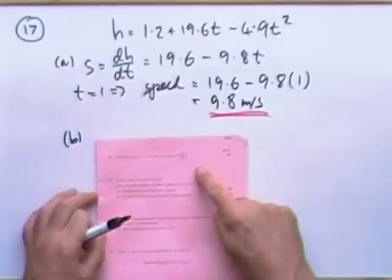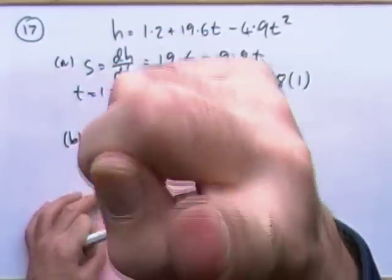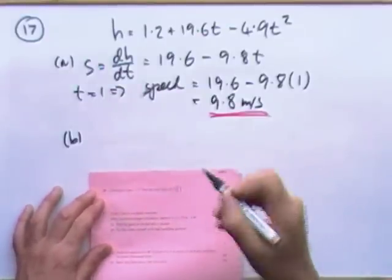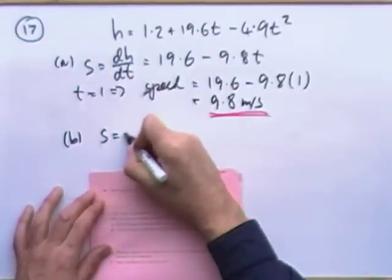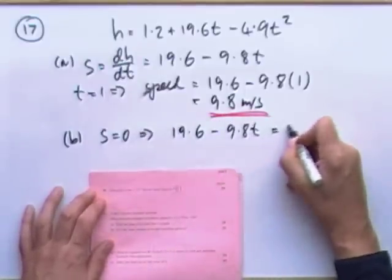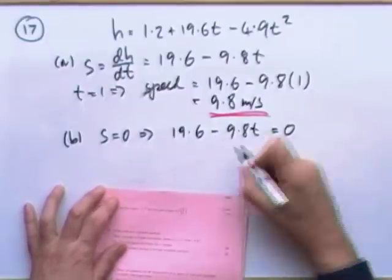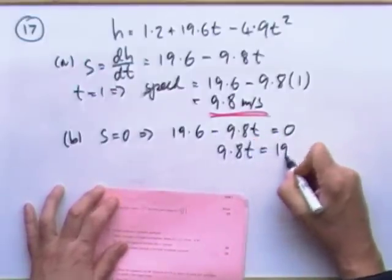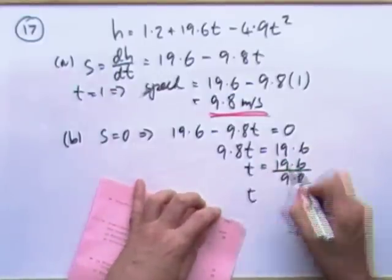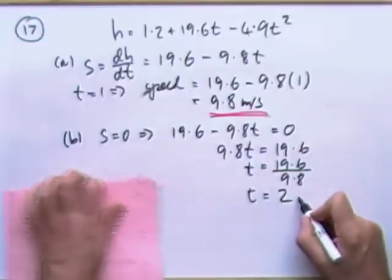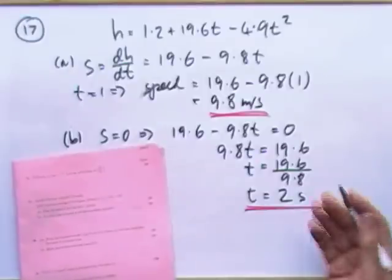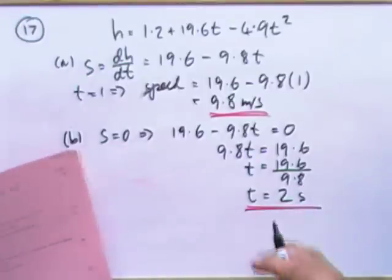Part b: for how many seconds was the ball travelling upwards? It travels up until it stops, so set speed equal to zero. 19.6 minus 9.8t equals zero, so 9.8t equals 19.6, so t equals 2. The ball travels upwards for 2 seconds.